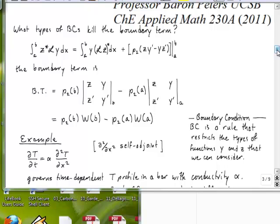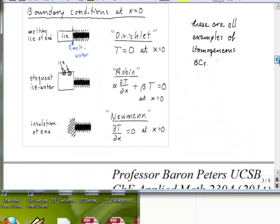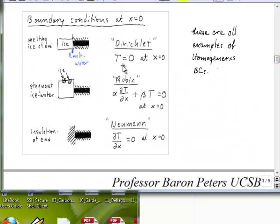We wanted to go through and analyze what kinds of boundary conditions will get rid of this, and I mentioned that homogeneous boundary conditions, that is the Dirichlet, Robin, or Neumann boundary conditions, all do that.